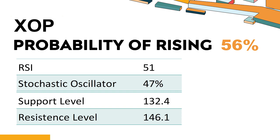The probability of XOP's share price rising is 56%. When the probability of rising is higher than 50%, it implies that the stock has a greater chance of going up. Combining multiple technical analysis indicators, XOP has four bullish signals and three bearish signals.